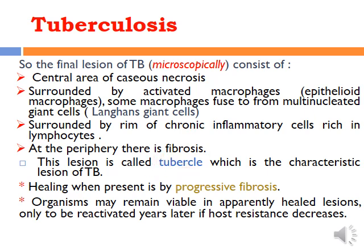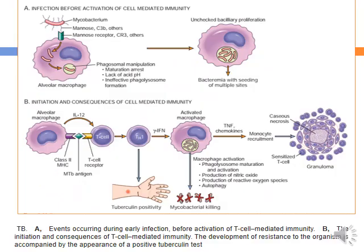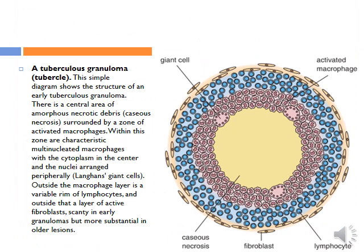The healing of such a tubercle is usually by progressive fibrosis. Sometimes the microorganisms may remain dormant inside such lesions and be reactivated when immunity is suppressed. The granuloma is composed of a peripheral rim of fibrous tissue, an inner rim of activated T cells, then epithelioid cells including Langhans giant cells.